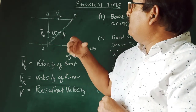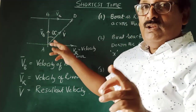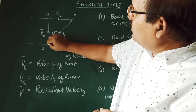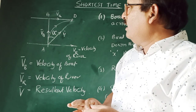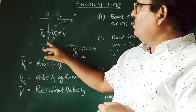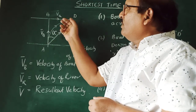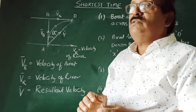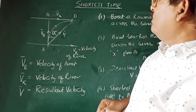Always remember: in the shortest time case, the boat has to be rowed straight across the river. When you row the boat straight across, the resultant of boat velocity and river velocity will be directed from A to B. Because the river pushes the boat towards the right, you will reach a point downstream from the point exactly opposite on the other side.